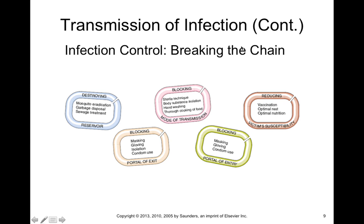By breaking the links of the chain, you prevent the microorganism from spreading from one phase to the next, and thereby you don't spread that infection. This can be done by destroying the vector — getting rid of mosquitoes — or having adequate waste disposal or sewage treatment. Blocking the portal of exit is also important: having infected patients wear masks, gloves, use isolation, or use a condom can prevent spread by blocking their portal of exit.